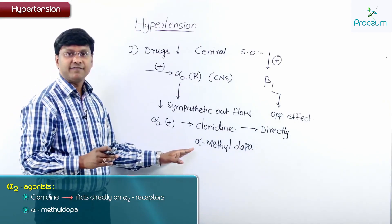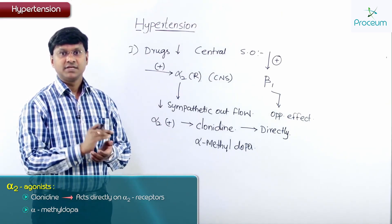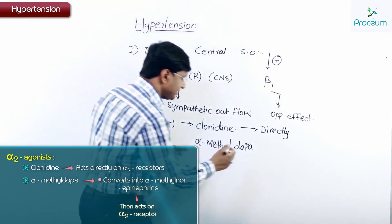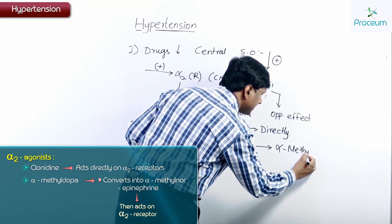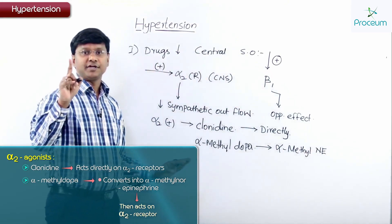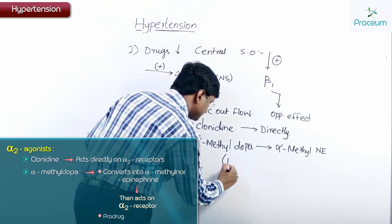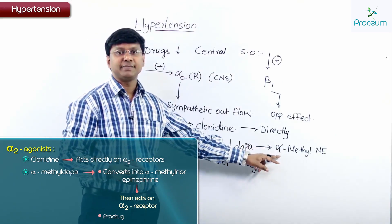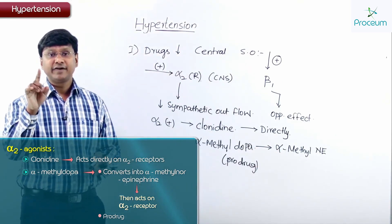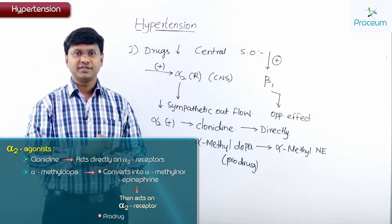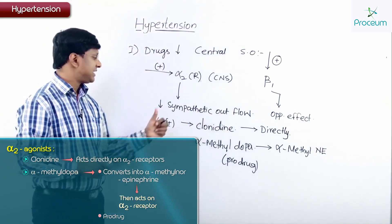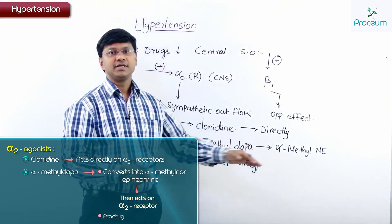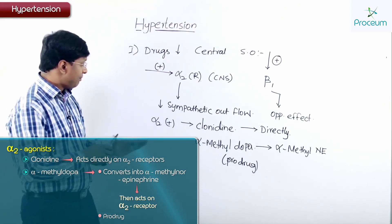Alpha-methyldopa does not have a direct effect — it has to be converted to alpha-methyl norepinephrine. So alpha-methyldopa is a prodrug that must be converted into its active metabolite, alpha-methyl norepinephrine, within the brain. Clonidine acts directly on alpha-2 receptors, whereas alpha-methyldopa is a prodrug converted to the active form.